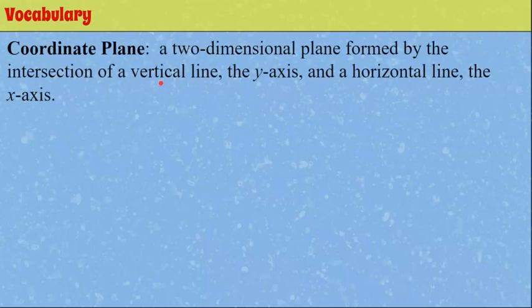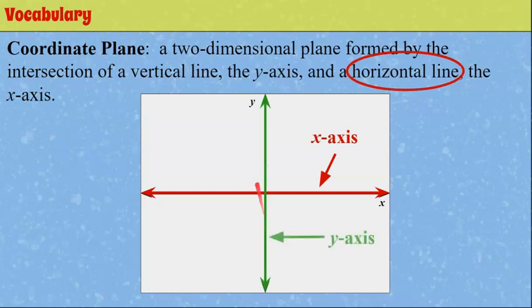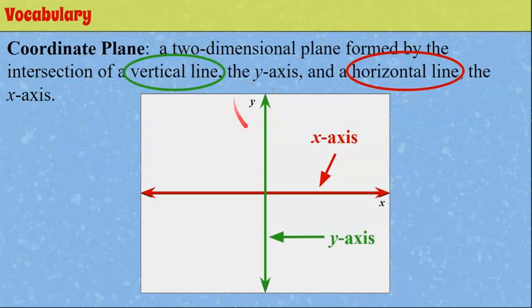Our vocabulary words we need to review to understand our lesson today: first is coordinate plane. Here's an image of our coordinate plane. This is a two-dimensional plane formed by the intersection of a vertical line — the y-axis — and a horizontal line, the x-axis. Think of it as two number lines: our horizontal number line, the x-axis, and our vertical number line, the y-axis, intersecting each other.